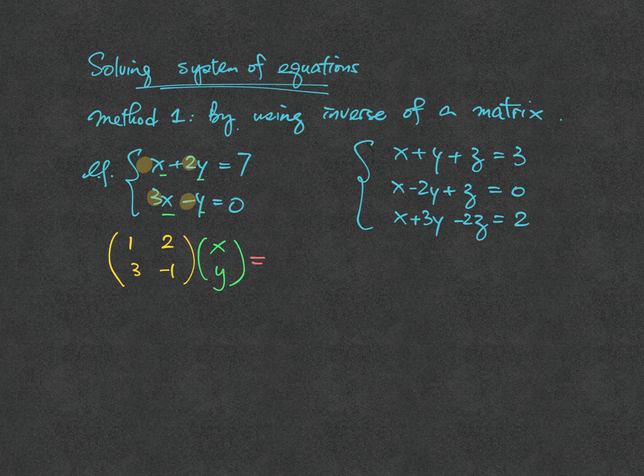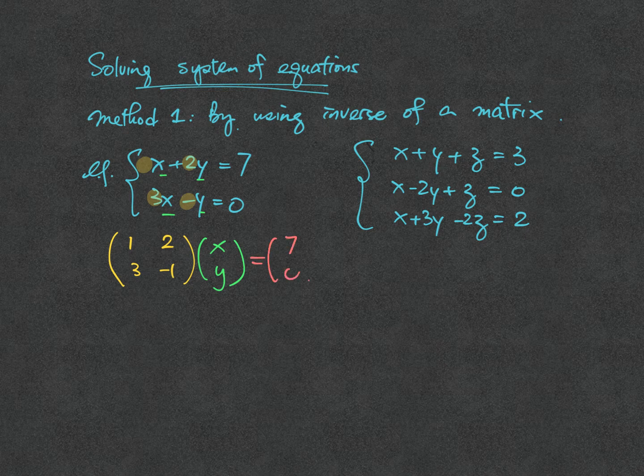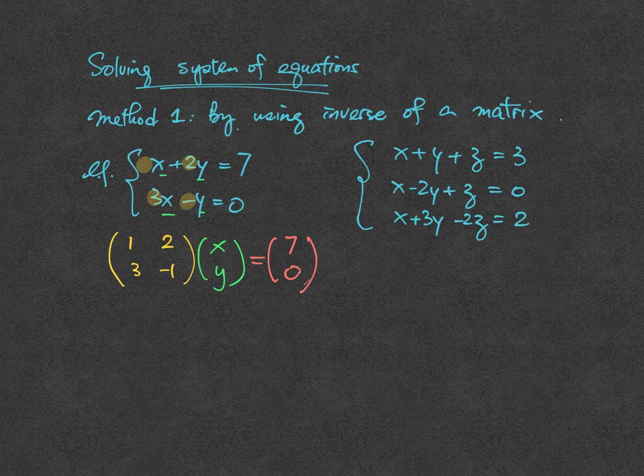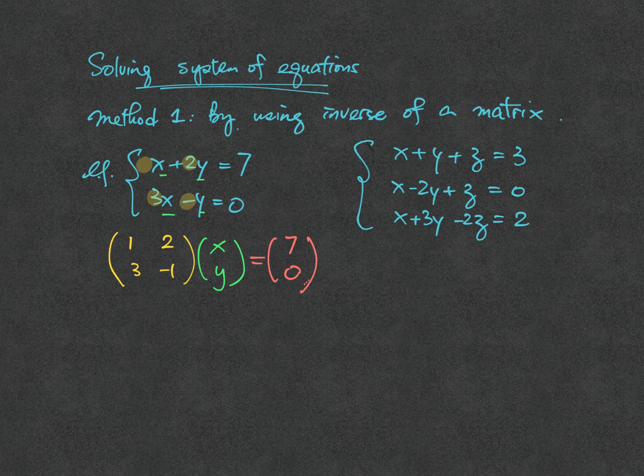Each equation will give you 7 and 0 respectively on the right hand side. So we can write the column matrix 7, 0 to the right as well. This is the way how we can turn two equations, two unknowns into the matrix form.